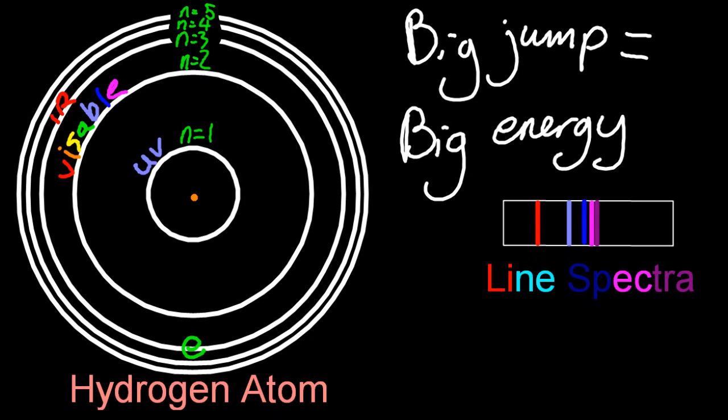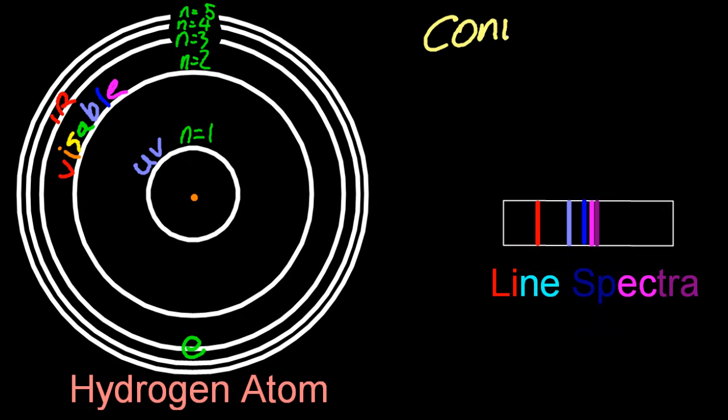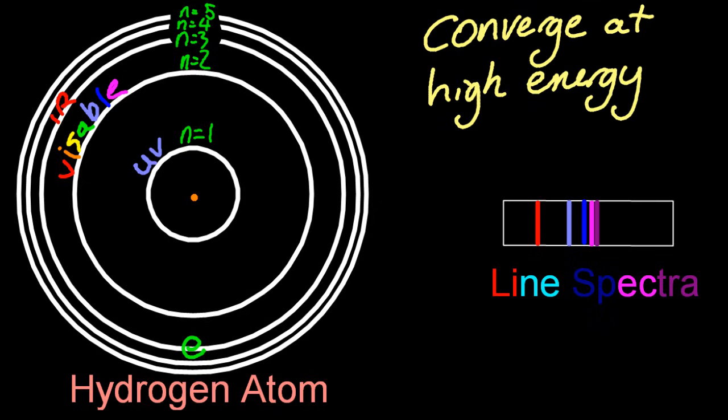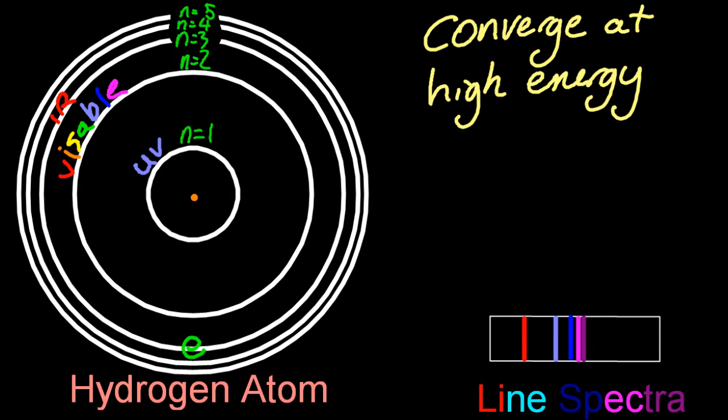After big jump equals big energy, the next phrase you need to get in your head to understand line spectra is converge at high energy. More often than not, that's the answer to the most common question, whether the lines converge in the line spectra. They converge at high energy. So let me try and explain that.